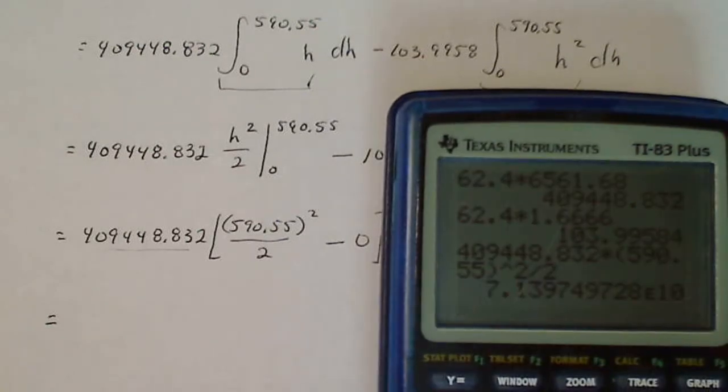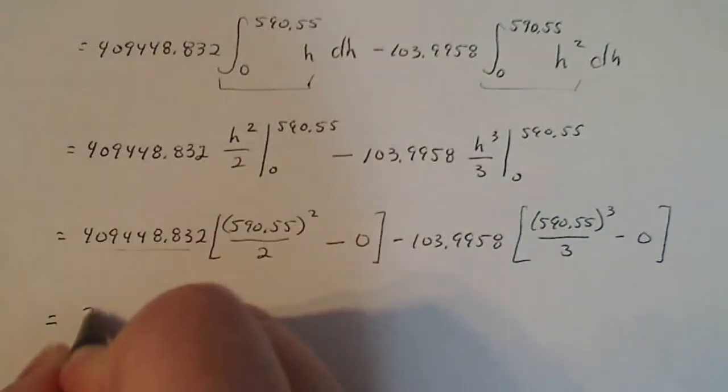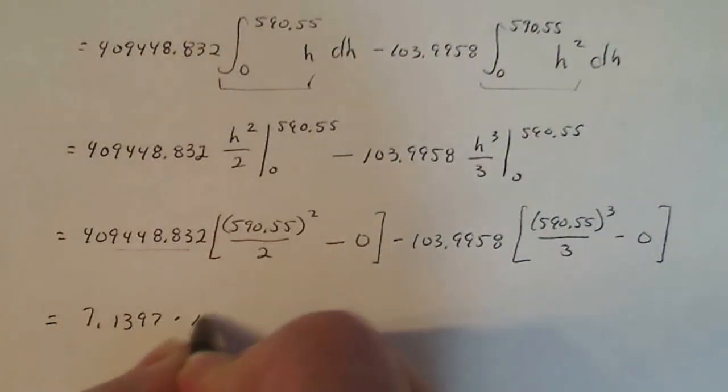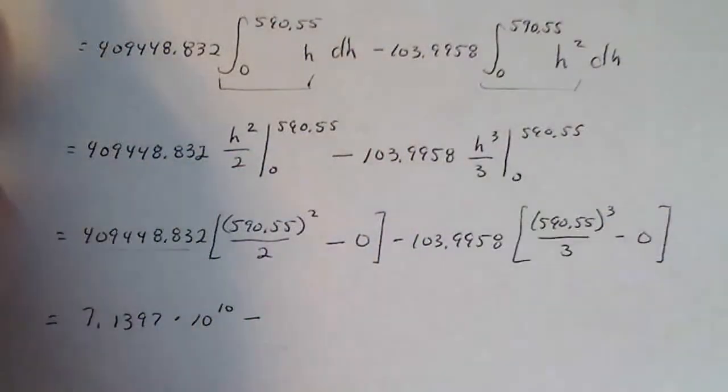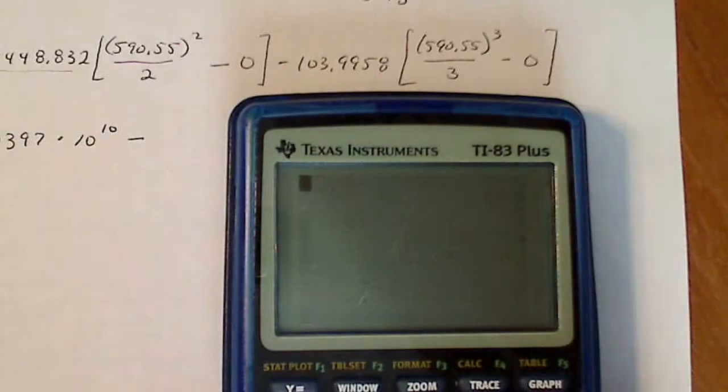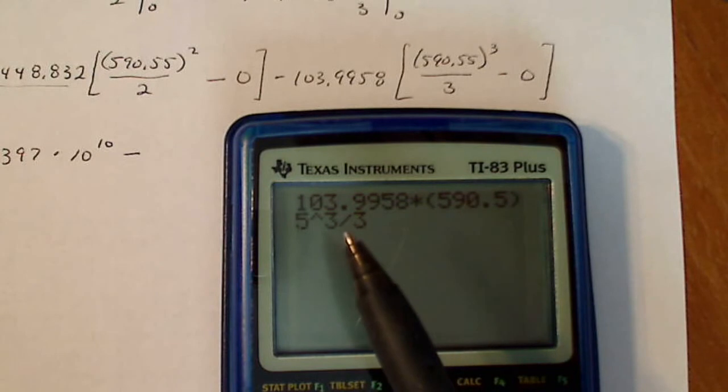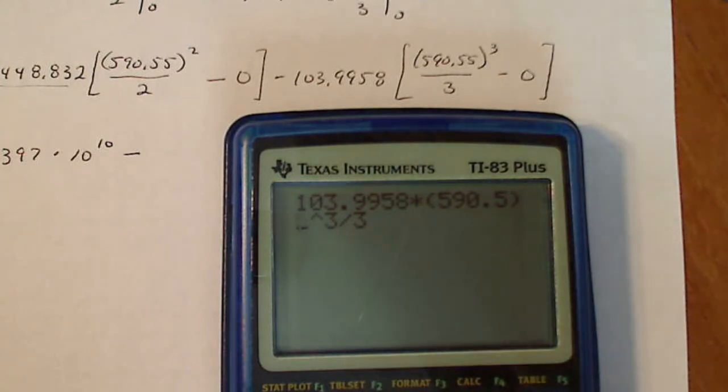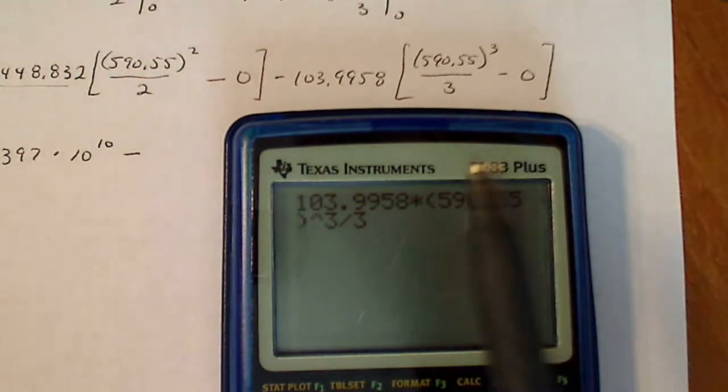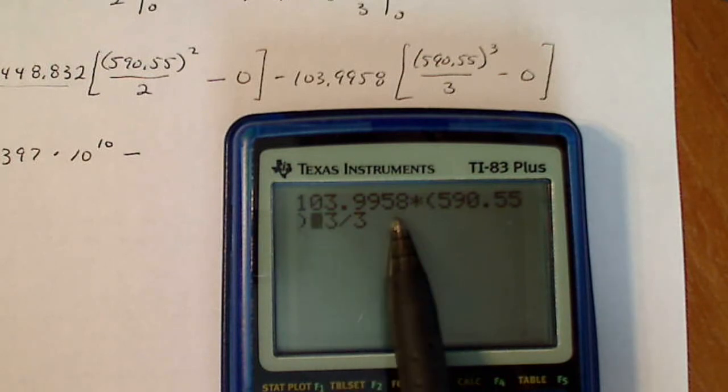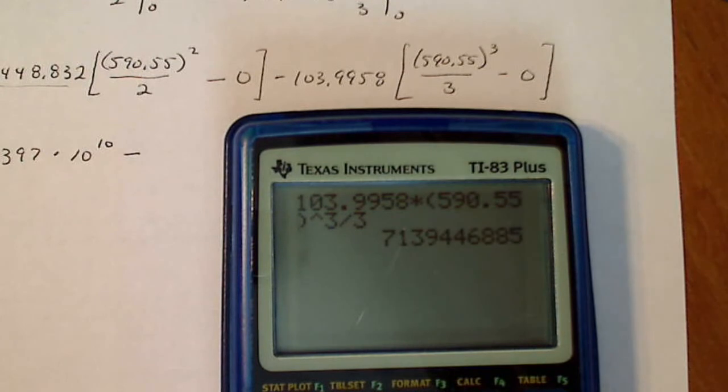7.1397 times 10 to the 10th minus, and I'm going to do the same thing with this number. 103.9958 times 590.55 cubed divided by three. That looks like it's okay. I think I'm missing a parenthesis. It's going to complain about that. So I need to put a parenthesis. I think it's going to have to go in here. This is hard to look at here. So 590.55 cubed divided by three times 103.9958. That looks all right. That's a lovely number.